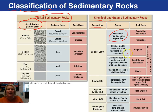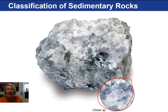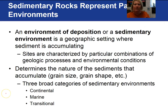Chemical and organic sedimentary rocks are broken up based on their chemical composition, and you'll notice that some of these rocks have crystalline or non-clastic textures while others have clastic. This is a good table to review and become familiar with. If you look at this close-up, you can see the interlocking grains — that tells you it is a non-clastic texture. This is rock salt.